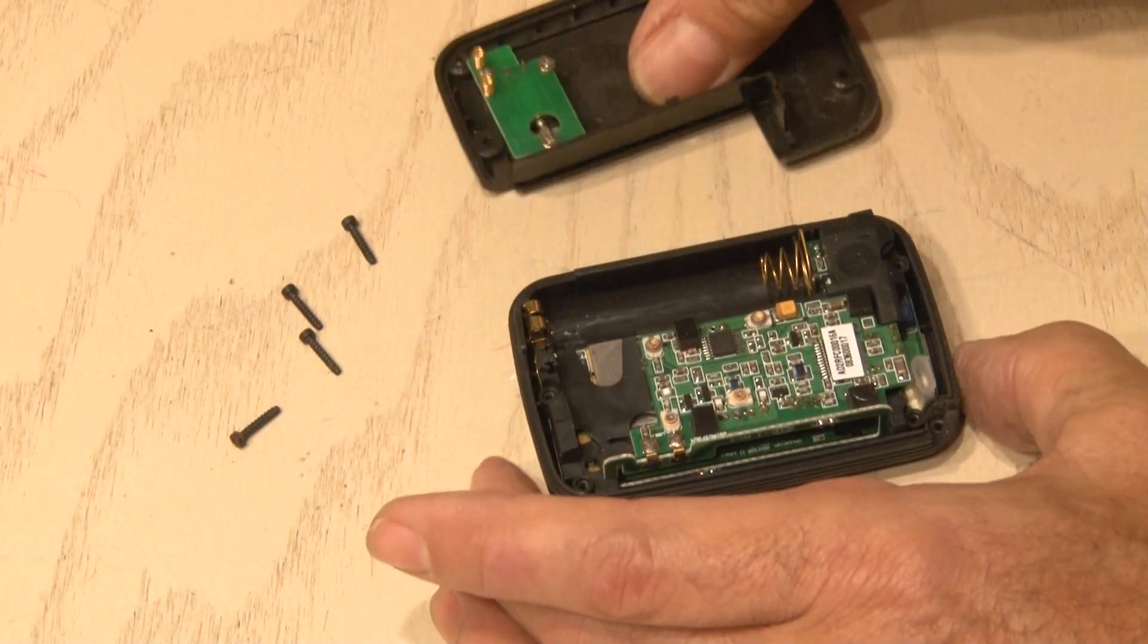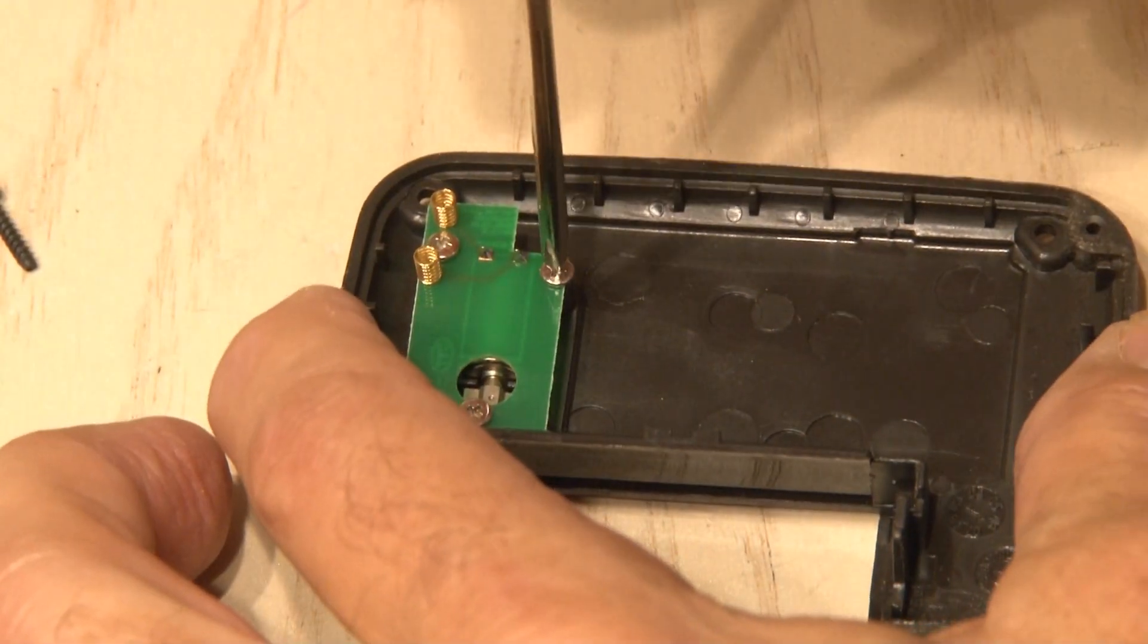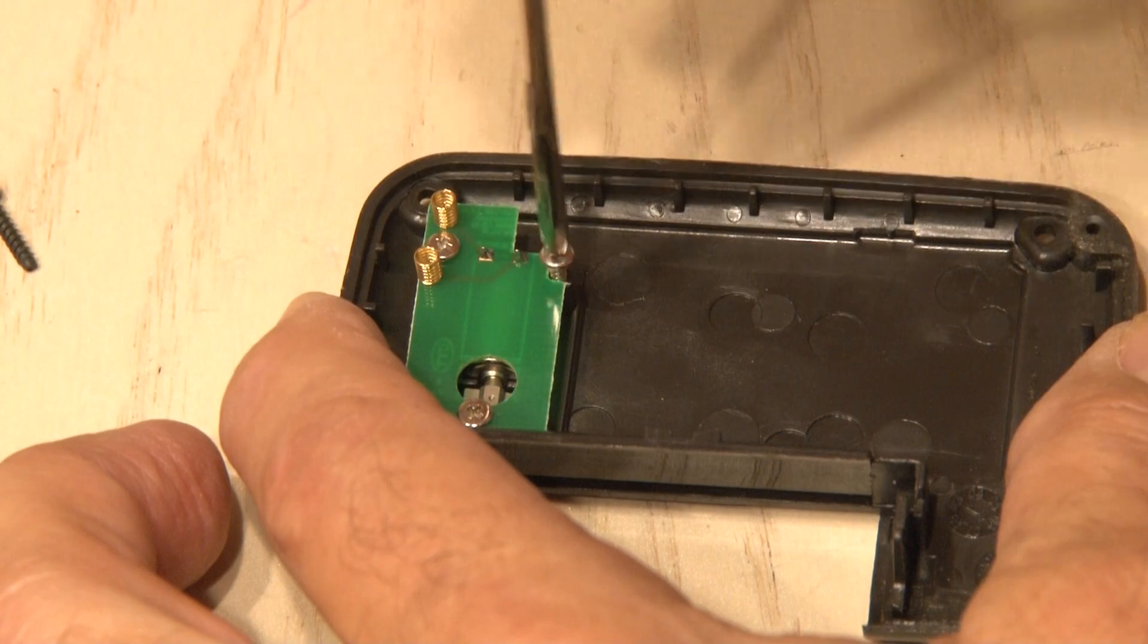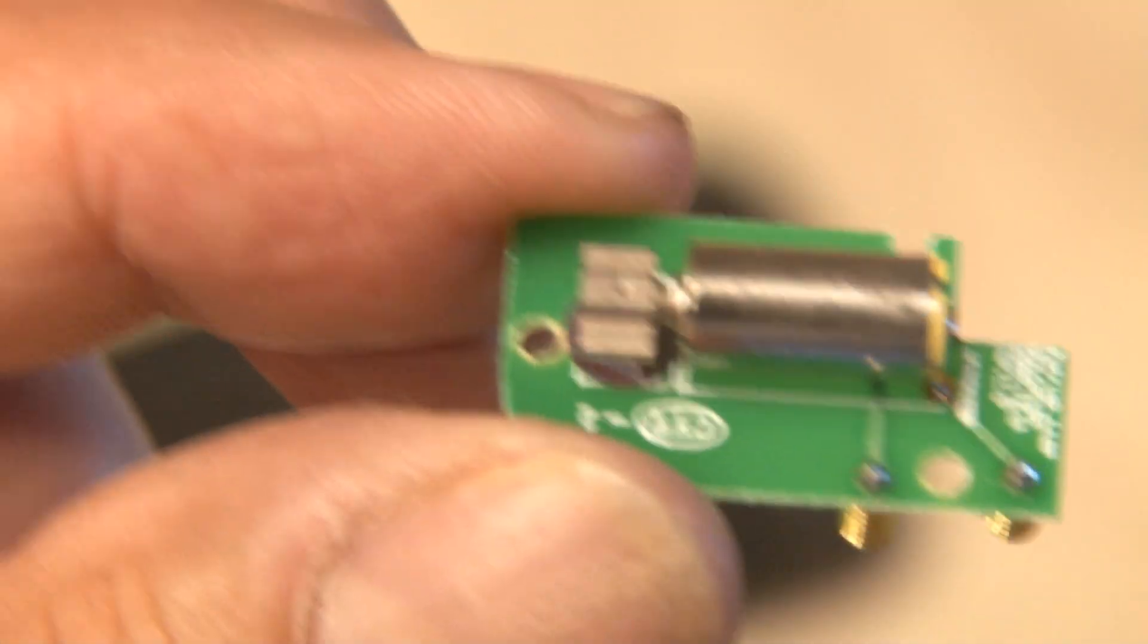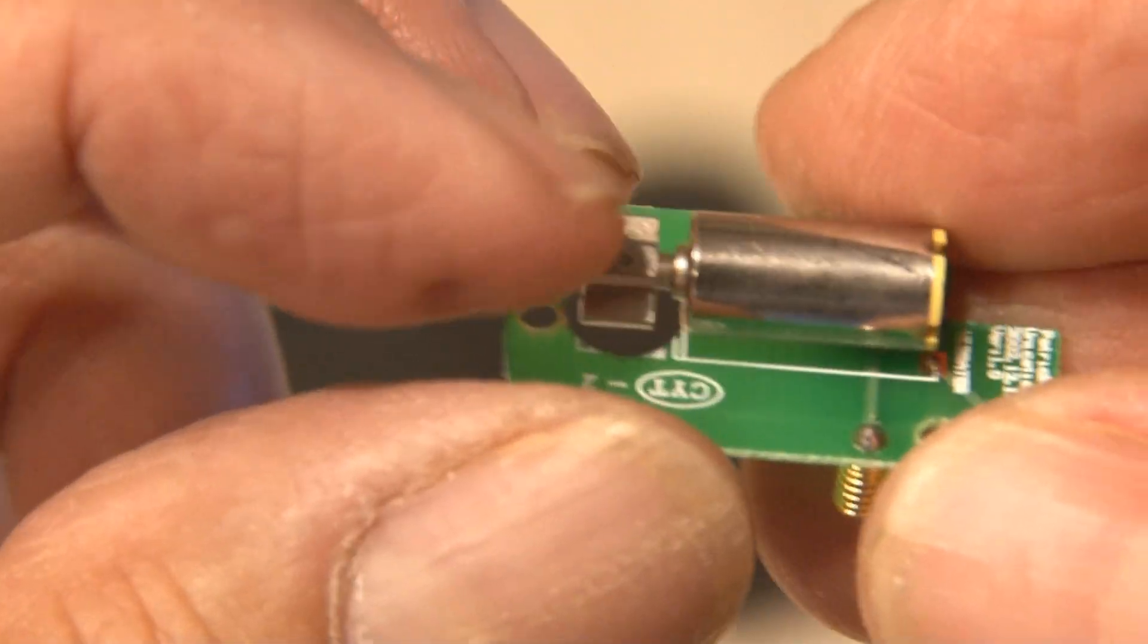Remove the cover and inside is a small assembly that has the vibrating motor. Remove those screws and here's the motor. You can also find little vibrating motors just like these inside old cell phones.